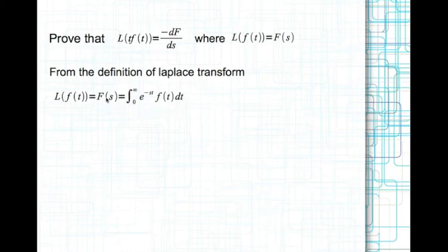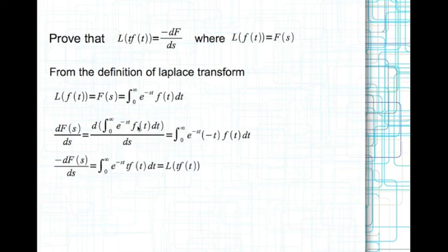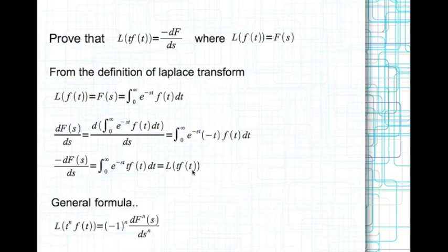Now we do direct differentiation of capital F of s with respect to s, which brings down a factor of minus t from the exponential, giving the integral from 0 to infinity of e to the power of minus s t times minus t times f of t dt. Taking the minus 1 outside, what's inside is by definition the Laplace transform of t times f of t. So minus dF by ds is the Laplace transform of t times f of t. In general, if you multiply f of t by t to the power of n, its Laplace transform is minus 1 to the power of n times the nth derivative of F of s with respect to s.